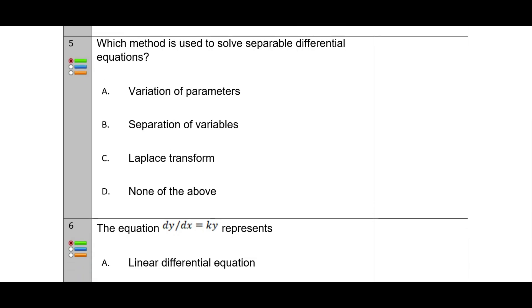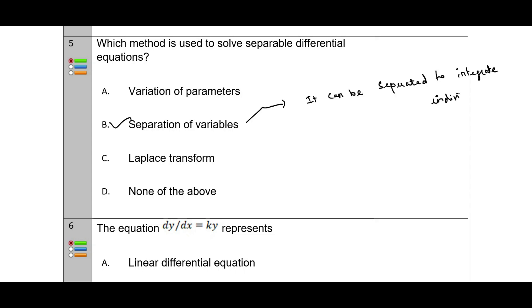Next, a direct question: which method is used to solve a separable differential equation? The correct answer is option B — separation of variables. For a separable equation, the variables can be separated and integrated individually. That is the key concept.